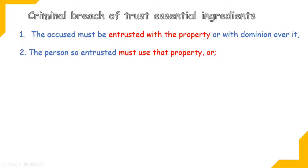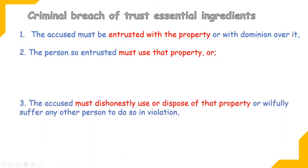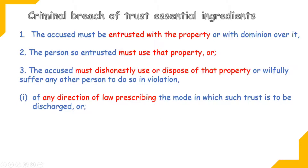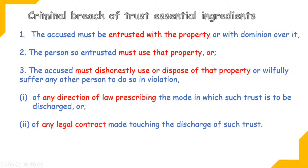The elements of criminal breach of trust are: first, the accused must be entrusted with the property — the factory boss was entrusted with money meant for the state insurance fund; second, the person entrusted must use that property dishonestly with bad intention; third, it must be in violation of any direction of law — he had to deposit in the state insurance fund; fourth, it can also be a violation of any legal contract — if there is a contract between A and B with a trust that goods will be delivered, breaking that trust constitutes criminal breach of trust.